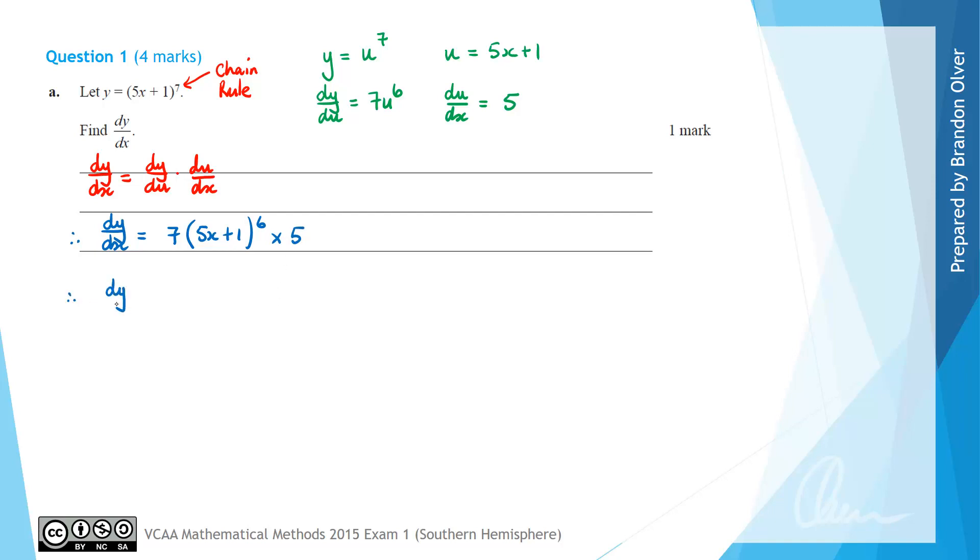Therefore dy/dx is going to equal 35 times 5x plus 1 to the power of 6. So that is the answer to part A of this question.